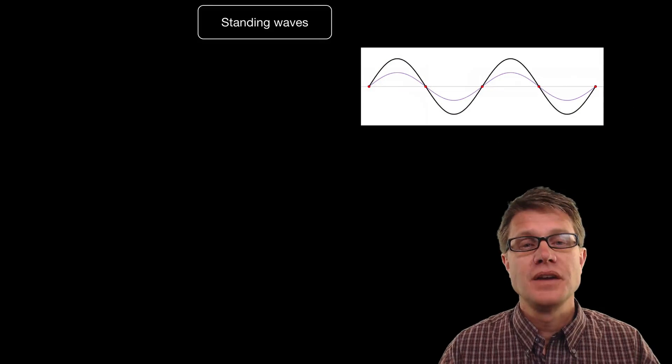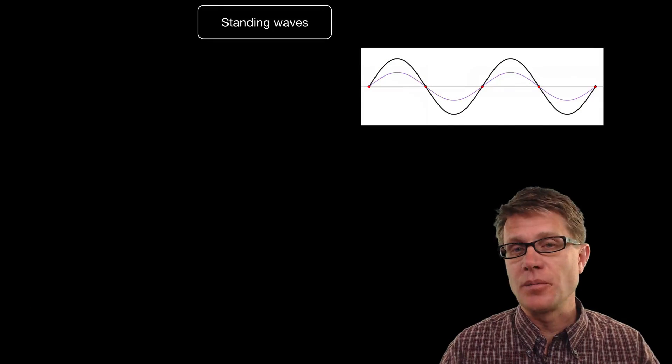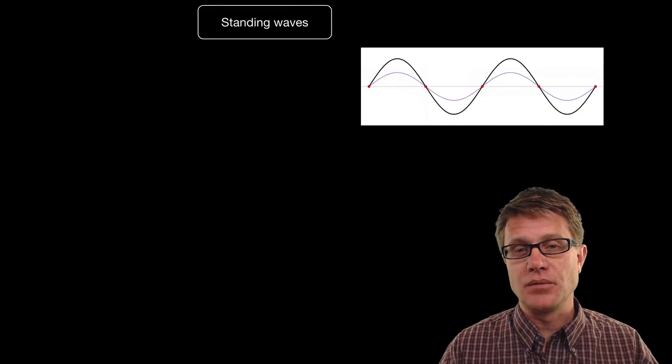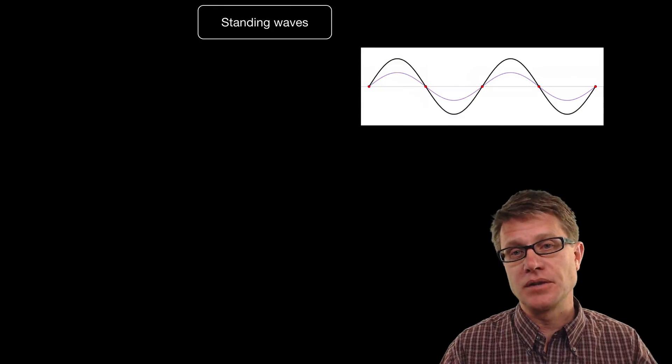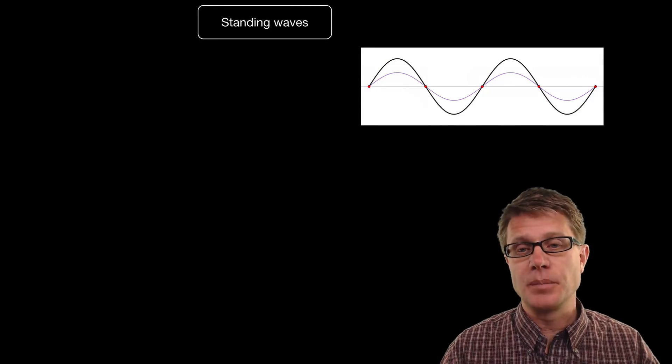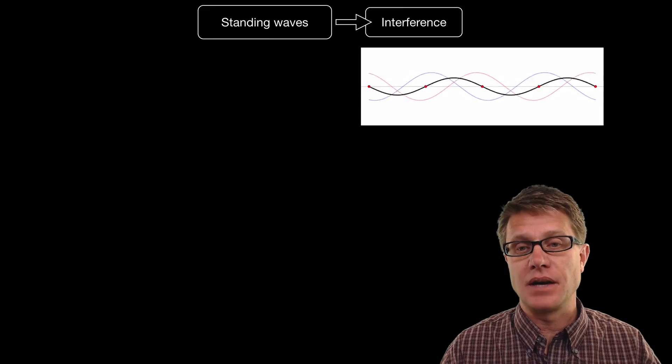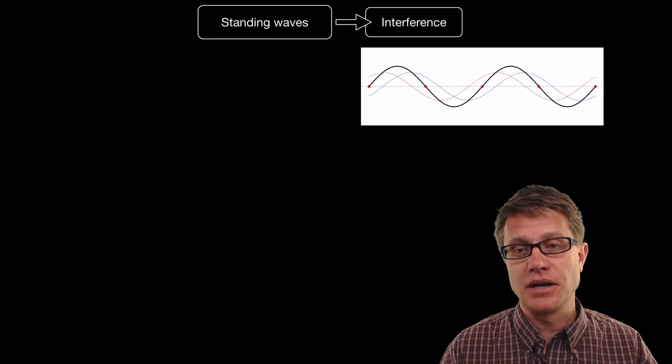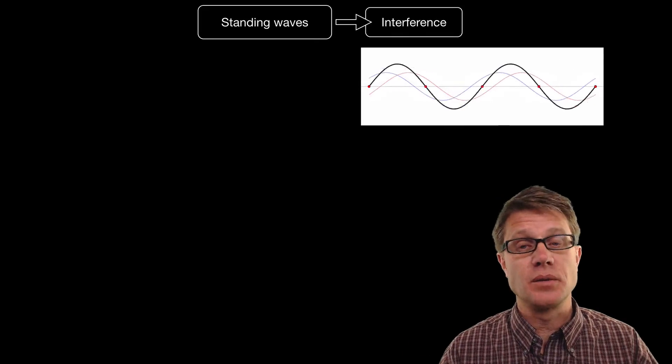Pretty cool. Standing waves are created when we have interference of waves going up and down — that interference pattern creates these standing waves.